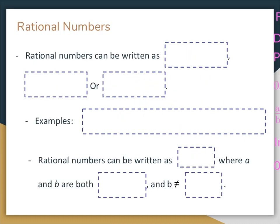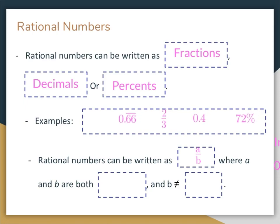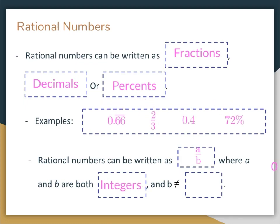Rational numbers can be written as fractions, decimals, or percents. For example: 0.66 repeating is a decimal, two-thirds is a fraction, 0.4 is a terminating decimal, and 72% is a percent. Rational numbers can be written as A over B, where A and B are both integers and B cannot equal zero. What this basically states is that any number that can be written as a ratio or fraction is rational. You can't have zero as a denominator, so just avoid fractions where zero is the denominator. All it's saying is: if you can write this number as a fraction, it is rational.